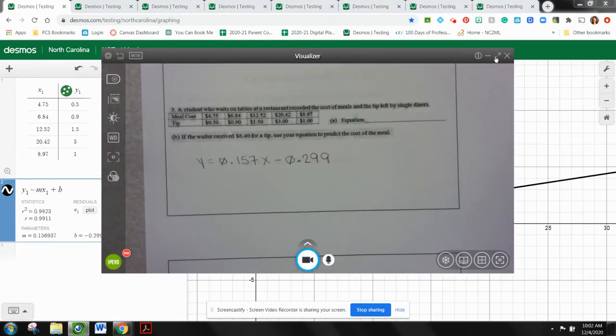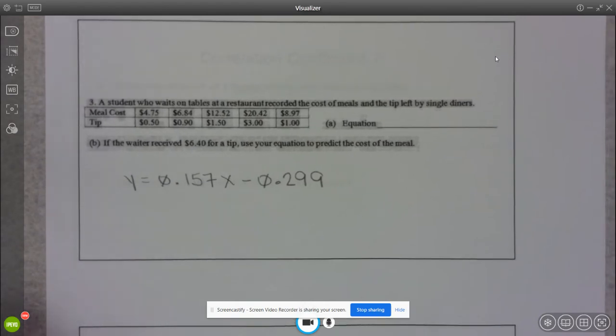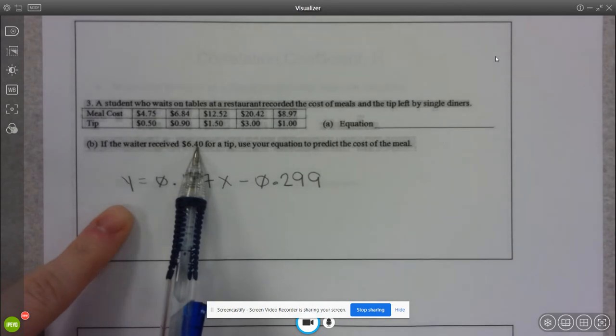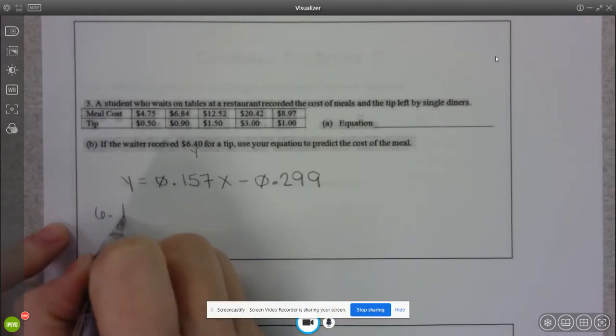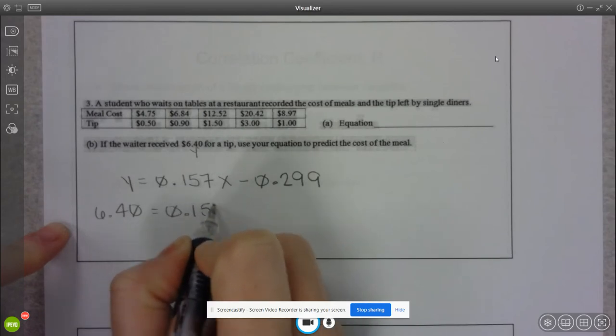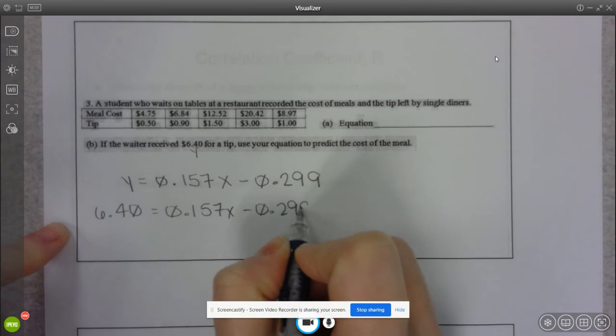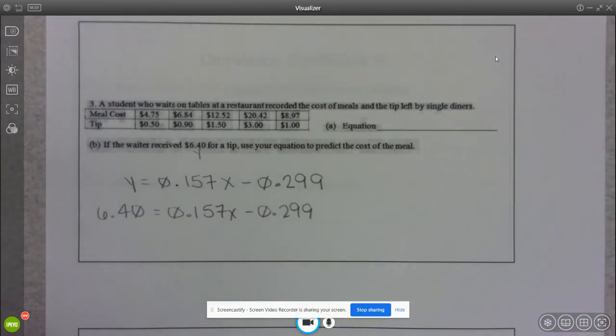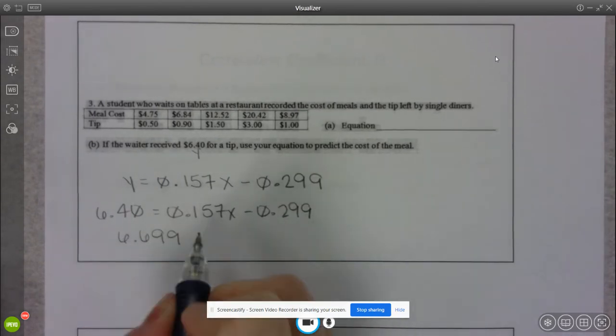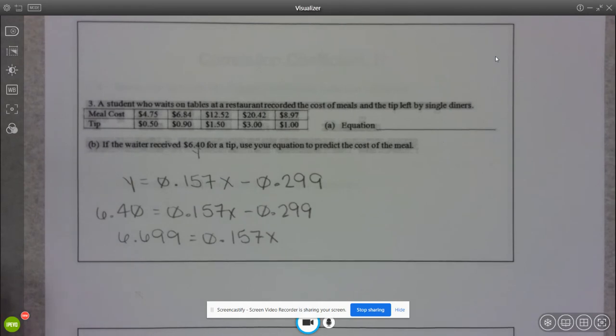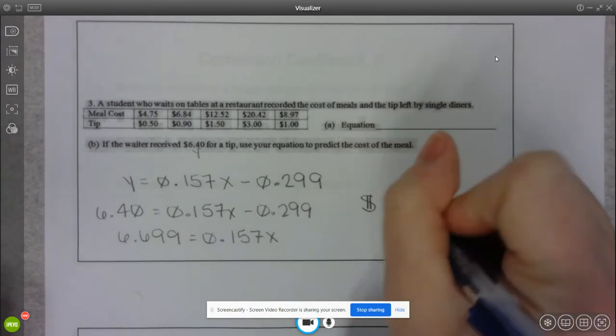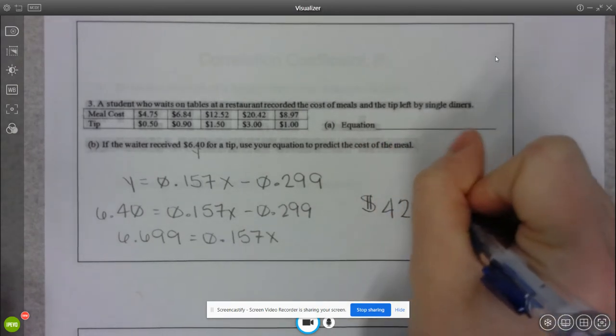So I'm going to come back to my document camera here because what it's asking us to do is they gave us a tip. So they want us to determine the cost of the meal. So they gave us a Y value. So $6.40 was the tip. And they want us to work backwards and predict what the meal cost was. So I'm going to add 0.299 first. So I'll have 6.699 equals 0.157 X. And then I'm going to divide by 0.157. So my meal cost would have been $42.67.